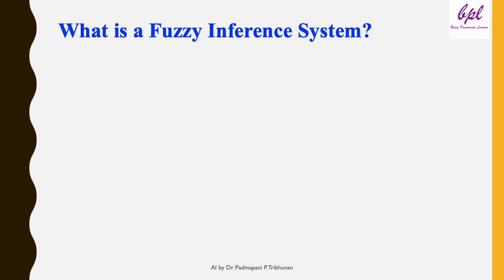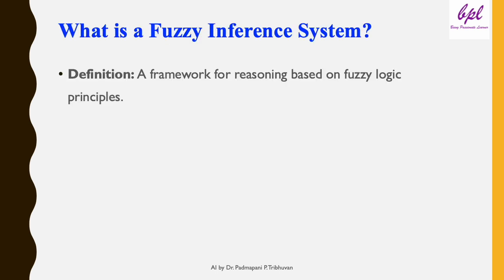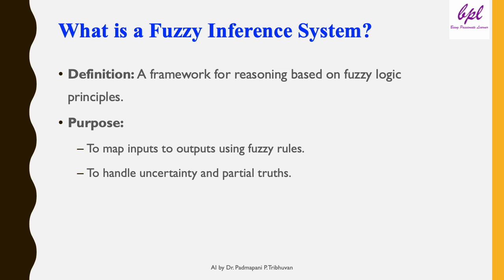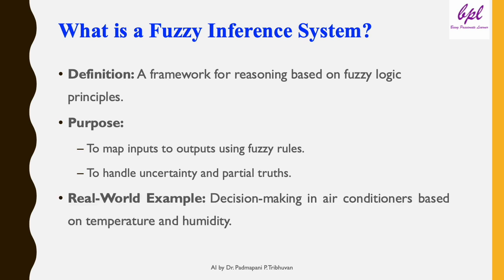A fuzzy inference system, or FIS, is a decision-making framework that uses fuzzy logic principles. It allows us to handle uncertainty and partial truth while mapping inputs to outputs using fuzzy rules. For example, an air conditioner may decide its cooling level based on temperature and humidity.